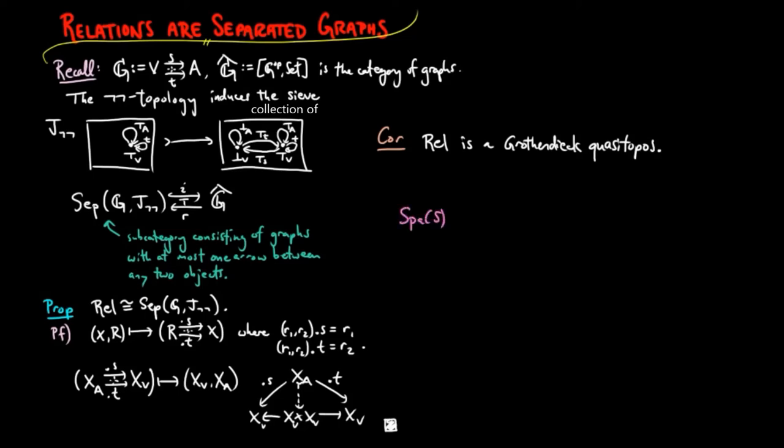So we see that we can view the category of set relations as a category of S-spaces for the squaring endofunctor on set or as separated graphs. In either case we should get a sense that relations have a very basic geometric structure.